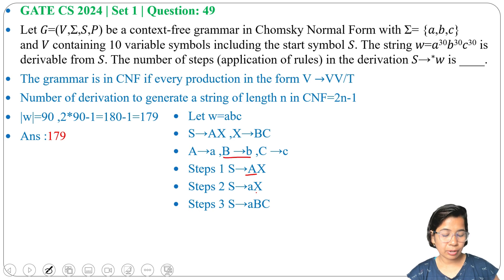Next, from this variable C will derive terminal c. So total 5 steps, 5 steps needed: 2 × 3 - 1, where 3 is the string length, w length = 3.